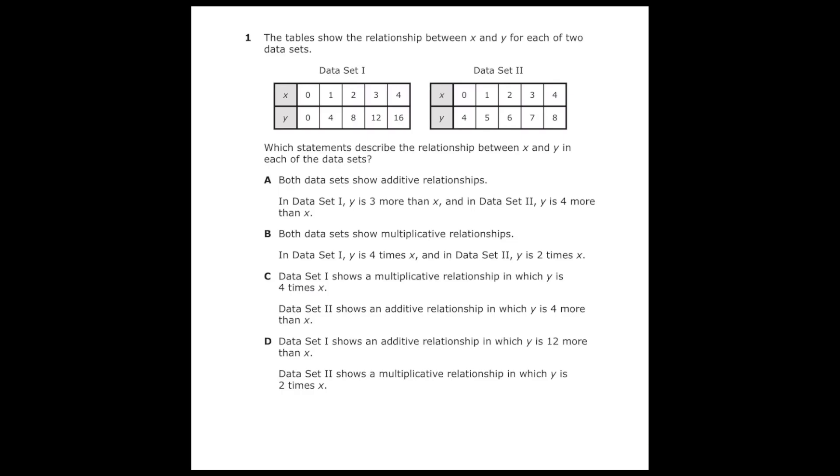This is number one from the 2022 sixth grade math STAR test, and I'm going to be going over every single problem from that test. Number one says the table shows the relationship between x and y for each of two data sets. Which statements describe the relationship between x and y in each of the data sets?